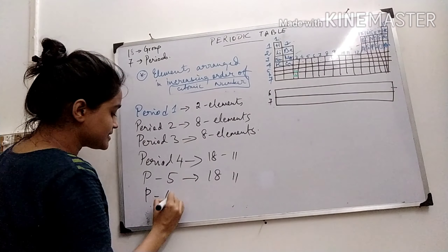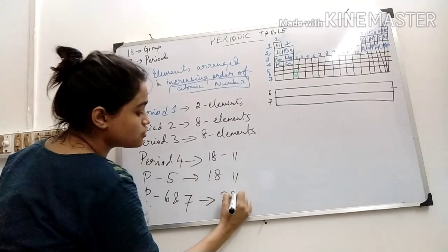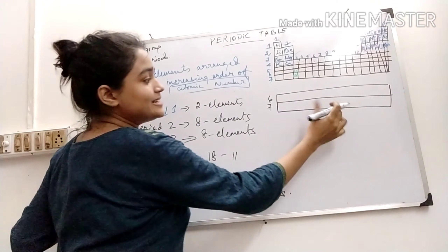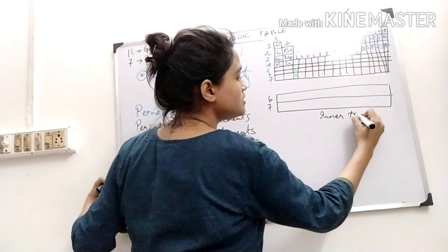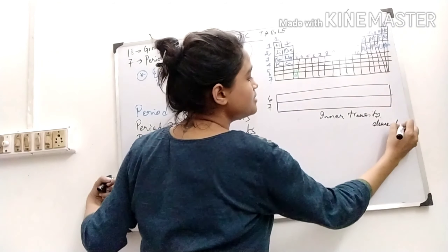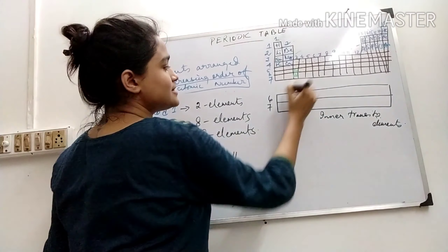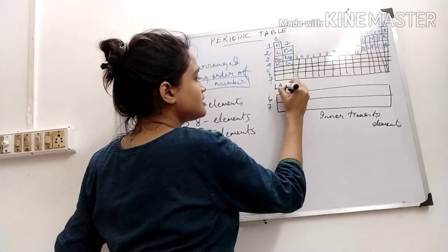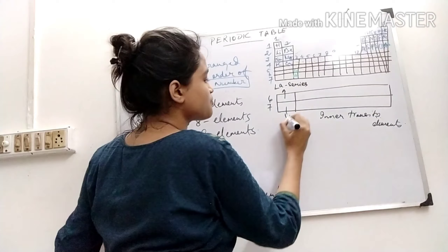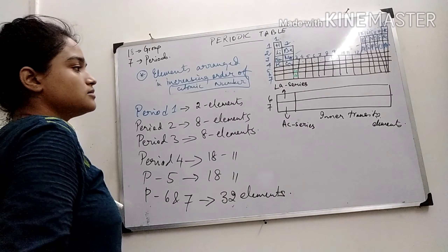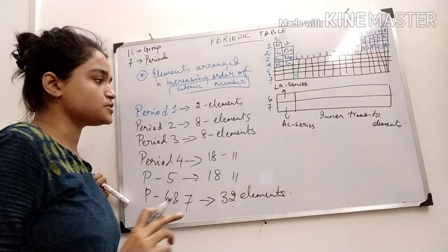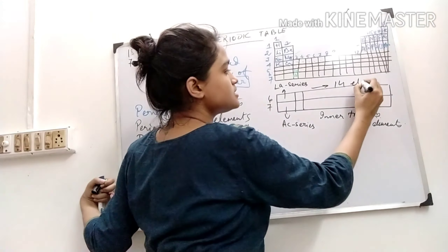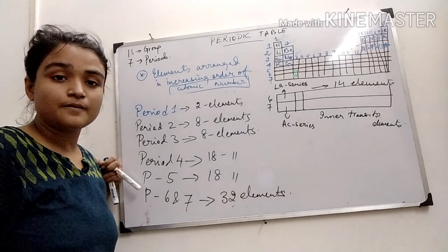But for periods 6 and 7, they have 32 elements — 18 plus these inner transition elements. This is the inner transition elements, that means the lanthanoid and actinoid series. This part is called the lanthanoid series and this is called the actinoid series. Including all these elements, it has 14 more elements, so 18 plus 14 is 32.